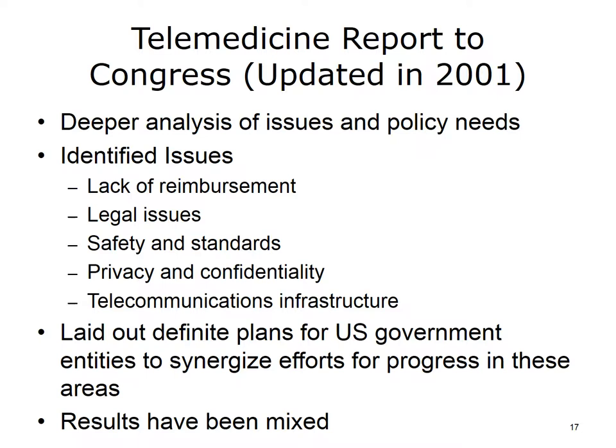Through the undaunted efforts of telemedicine advocates, the telemedicine report to Congress was updated in 2001 under a new governance that included many telemedicine organizations and practitioners. This resulted in a deeper analysis and focus on policy needs from a governmental level. The 2001 report identified five key focus areas for policy development: lack of reimbursement, legal issues, safety and related standards, patient privacy and confidentiality, and telecommunications infrastructure. Unlike its predecessor, the 2001 report made concrete recommendations and developed action plans for specific governmental agencies for improving the policy issues. While many of these recommendations were implemented and are still ongoing, the results are mixed, but some areas have shown progress.